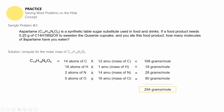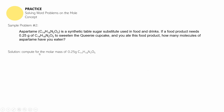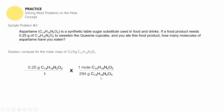So there are 294 grams of aspartame per one mole. The question is: if you have 0.25 grams of it, how many molecules are there? The second part is to compute the number of moles. You take 0.25 grams of aspartame and multiply by 1 mole over 294 grams of aspartame. The grams cancel out, and dividing 0.25 by 294 gives 0.00085 moles of aspartame.